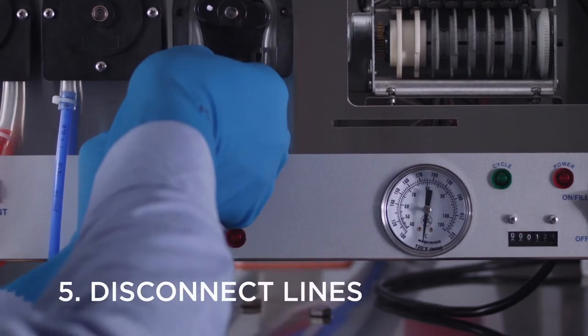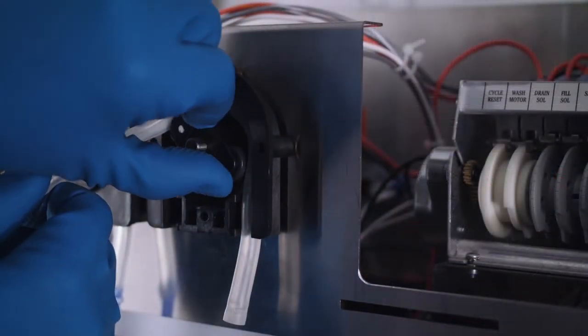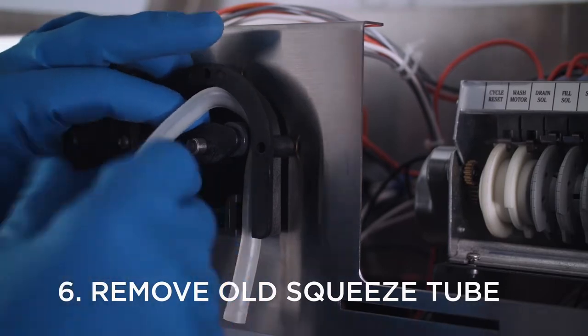Disconnect both the incoming and outgoing chemical lines. Then, remove the squeeze tube from the rear housing.